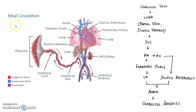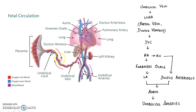Now let us see about fetal circulation before birth in detail. Oxygen rich blood enters the fetus from the maternal circulation through the umbilical vein. Remember in this case a vein carries oxygenated blood.